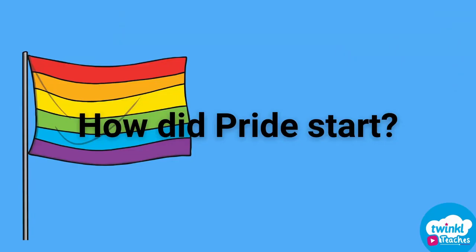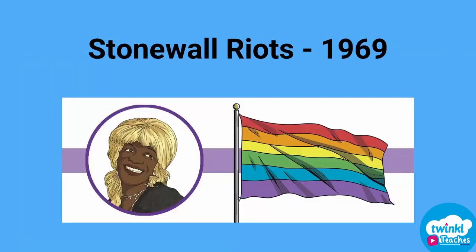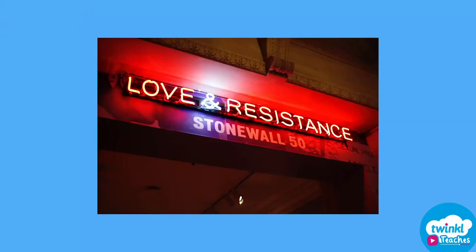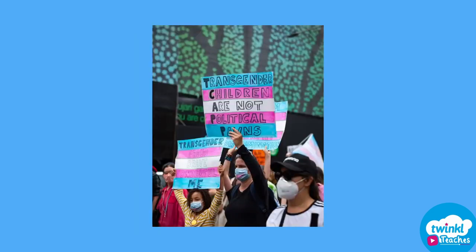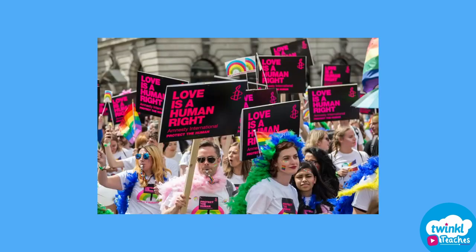But how did Pride start? Pride started in 1969 when LGBTQ people rioted against the police raid of the Stonewall Inn in New York. The Stonewall Inn was one of the few places where LGBTQ plus people could be themselves. After that riot, a massive Pride March took place in New York, and that was the first Pride March that gave birth to all of the other Pride Marches that take place every June all over the world.